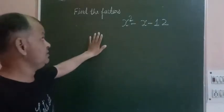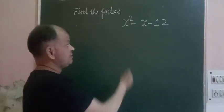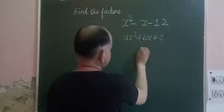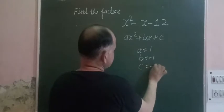The quadratic expression given to us is x square minus x minus 12. We know that this is the type x square plus bx plus c. Here a is 1, b is minus 1, and c is minus 12.